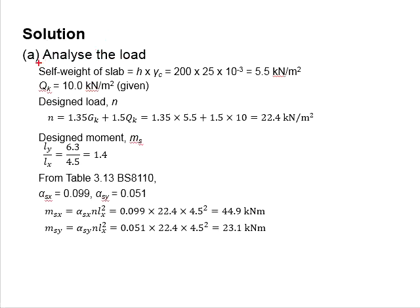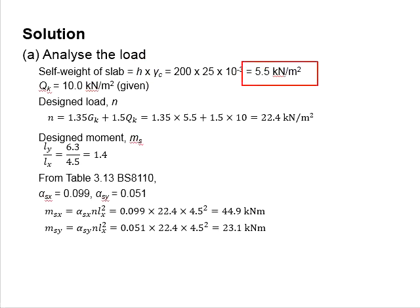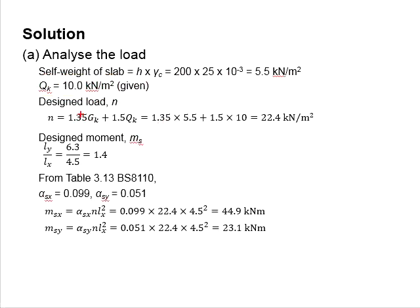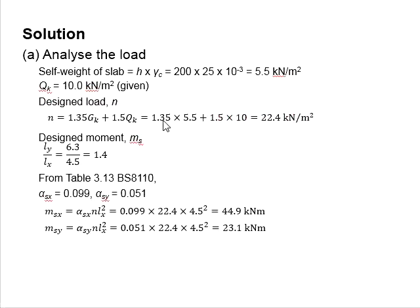The permanent actions will be the self-weight of the slab, obtained by multiplying the height of the slab with the unit weight, giving 5.5 kilonewton per meter square. The QK is given as 10 kilonewton per meter square. Therefore, the design load is 1.35 GK plus 1.5 QK, which equals 22.4 kilonewton per meter square.